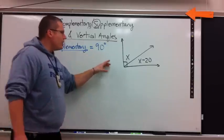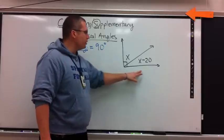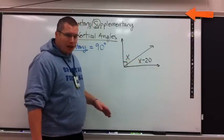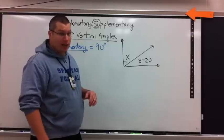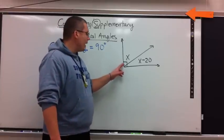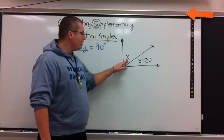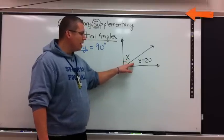We're going to take a look at a complementary example. Remember, complementary equals 90 degrees. Here is a picture of a complementary set of angles. Two angles side-by-side, also known as adjacent. Adjacent means side-by-side. That add up to 90 degrees.